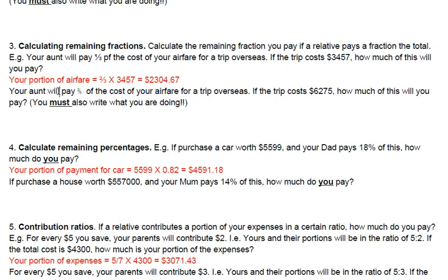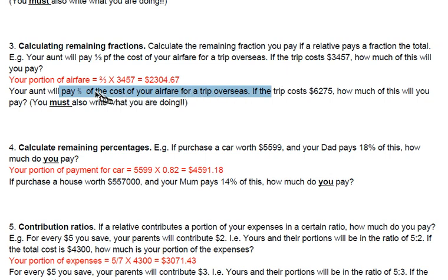You've got another question where the aunt pays two-fifths of the cost of the airfare. You have to work out your portion — don't use two-fifths, that's how much the aunt is paying. Work out how much you are paying, then multiply that fraction by the total amount.